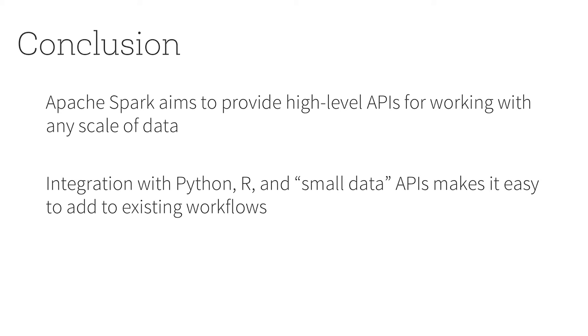To summarize: Apache Spark aims to provide high-level APIs for data processing that will work at any scale of data. A major move recently — continued by these two features — is integrating it very well with small data libraries and APIs such as Python, R, and data frames. The Project Tungsten work does powerful database-like optimization under these APIs, and the structured streaming work makes them incremental. No other data frame implementation does these things. It shows that it's possible to do a lot under existing interfaces that people are already very familiar with.